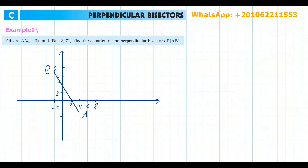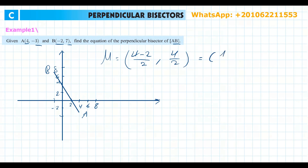We need to find the midpoint first. Using the midpoint rule: x-coordinate is (4 + (-2))/2 = 2/2 = 1, and y-coordinate is (-3 + 7)/2 = 4/2 = 2. So the midpoint M is (1, 2), which lies between point A and point B.